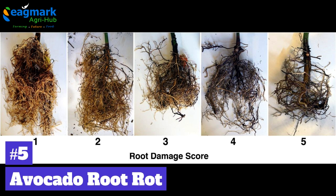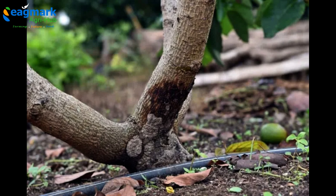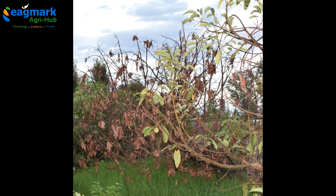Number 5: Avocado Root Rot. It is caused by the Phytophthora cinnamomi fungus, commonly known as phytophthora root rot or cinnamon fungus — a devastating plant pathogen that affects not only avocado trees but also a wide range of plant species. Avocado trees are particularly susceptible, and infection can lead to root rot and eventually the death of the tree. The pathogen spreads through the soil and water, infecting the roots and causing them to rot. Infected trees exhibit symptoms such as wilting, yellowing of leaves, poor growth, and ultimately tree decline. In severe cases, the entire tree can die.